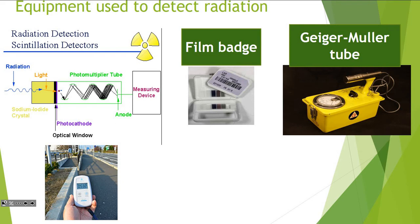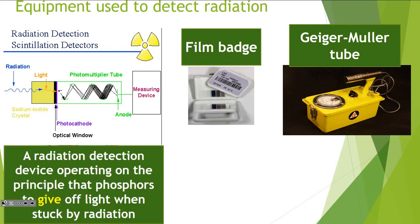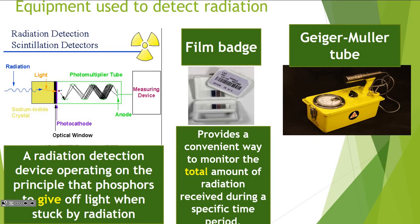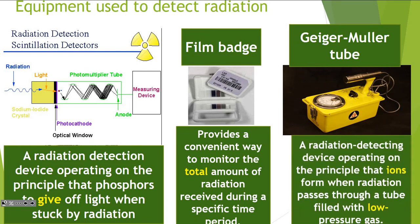That bottom part is just a really big battery. A radiation detection device operates on the principle that phosphorus gives off light when struck by radiation. A film badge provides a convenient way to monitor the total amount of radiation received in a specific amount of time, but doesn't narrow down what kind — it's just a total amount. A Geiger counter detects by the principle that ions form when radiation passes through a tube filled with low-pressure gas.